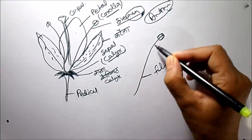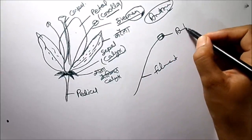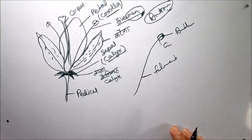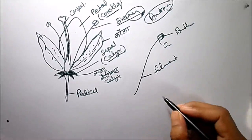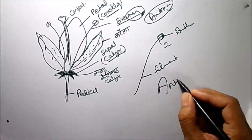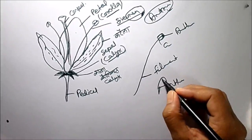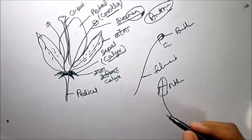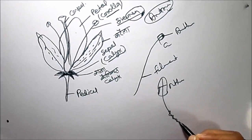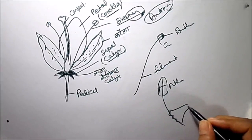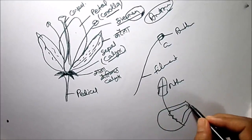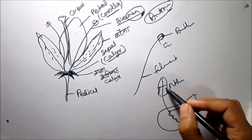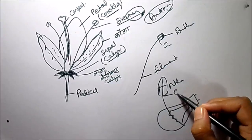The first part is filament, this is called the filament. This is the anther, and this is the connective. To memorize this: first write down 'anther'. Have you seen the filament of a bulb? Make it like that filament. This one is filament, and this connecting point is the connective.